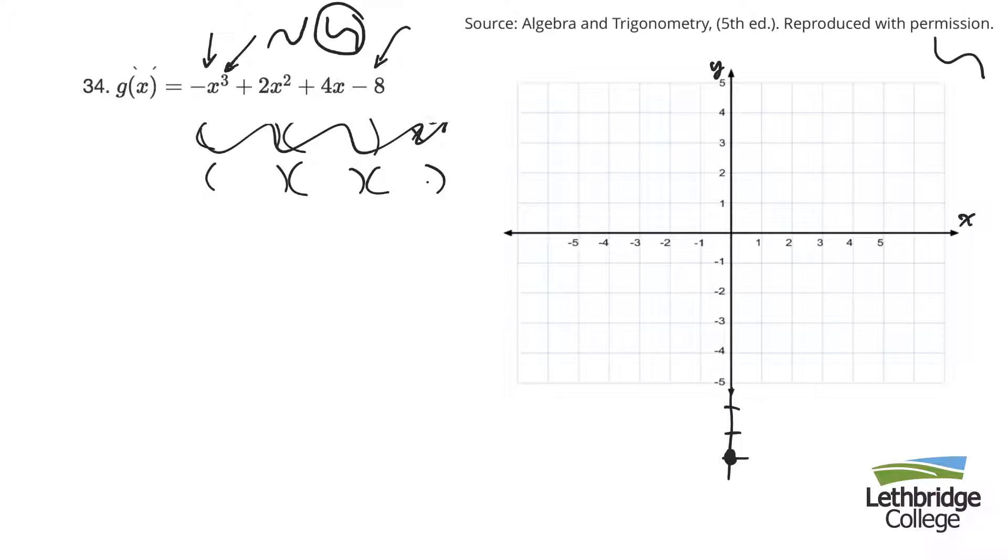In Math 95, we'll show you how you can use synthetic division to factor this. But in Math 92, all the ones we'll give you will be ones where you can use group factoring to solve. In this first one, I'm going to group factor. So I'm going to take out a common factor. So it'll be negative x squared, and that'll leave me with a positive x minus 2. Out of the second one, I can take out a positive 4, and that leaves me with an x minus 2.